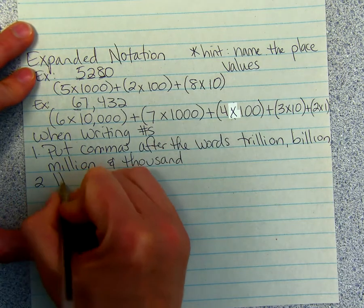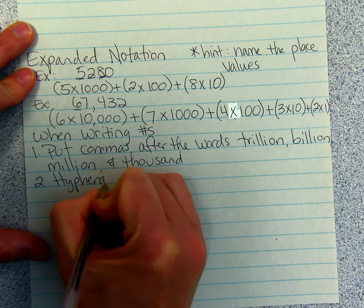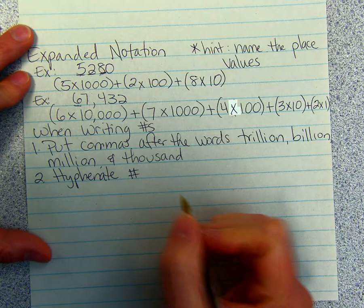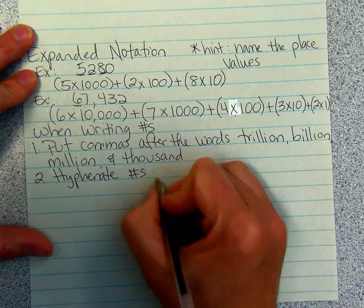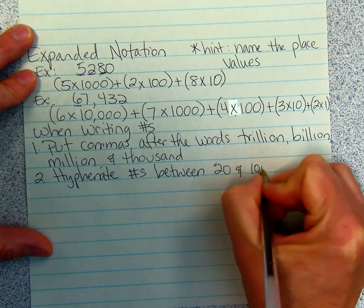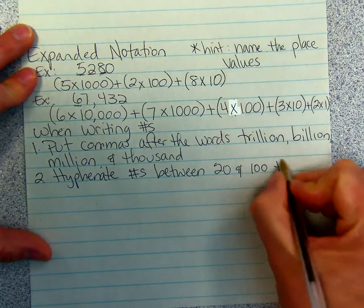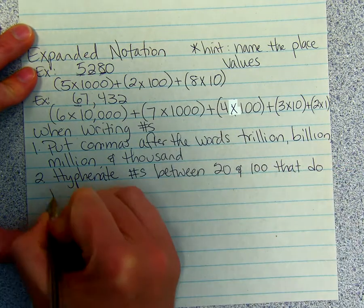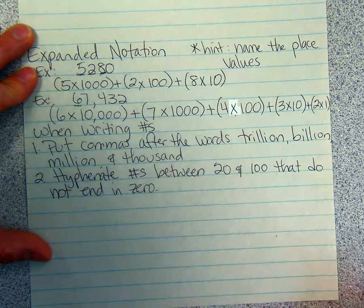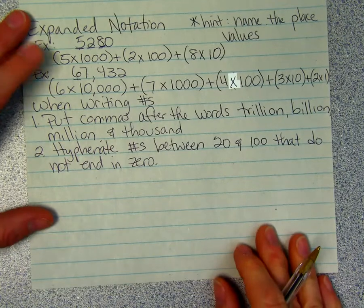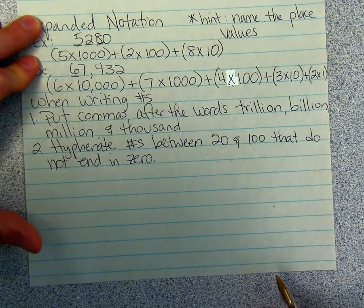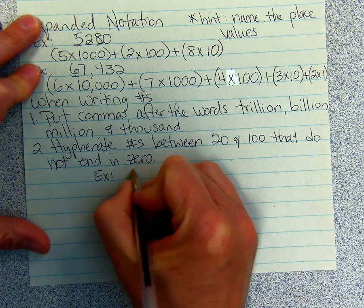You need to remember to hyphenate. That just means put a dash between the words. We have to hyphenate the numbers between 20 and 100 that do not end in 0. For instance, 22. That number does not end in 0.